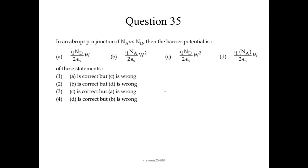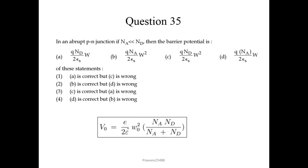Question number 35: in an abrupt PN junction where NA is very much less than ND, the barrier potential expression — given as E/(2ε₀) · (NA·ND)/(NA + ND) — simplifies because the denominator becomes approximately ND, leaving only NA. So it matches option B. The second option is the correct answer. Note that W here is the depletion width.